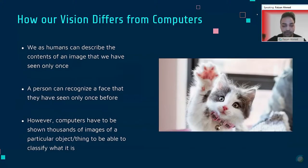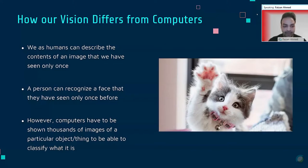To better understand computer vision, we have to understand how it differs from our vision. We as humans can describe the contents of an image we've seen only once. We can recognize a face we've only seen once before — our visual perception and understanding is very strong. We take in raw sensory information through our eyes and interpret it very quickly. The human brain is a product of millions of years of evolution, allowing us to process images and the real world very easily. Whereas computers have to be shown hundreds if not thousands of images of a particular object to classify what it is.